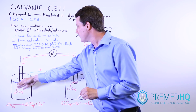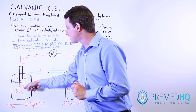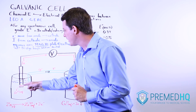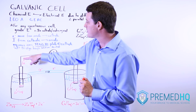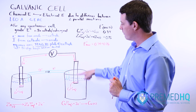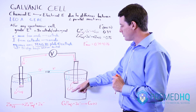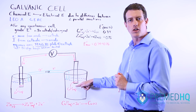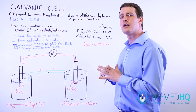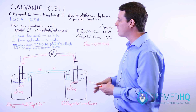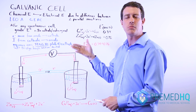Moving left to right through the circuit: solid zinc is oxidized into a zinc cation, releasing two electrons. Those electrons travel through the wire, reach the cathode, and the aqueous copper ions are reduced into solid copper. This flow of electrons generates the current that powers whatever component — voltmeter, resistor, or circuit — is attached to this battery.